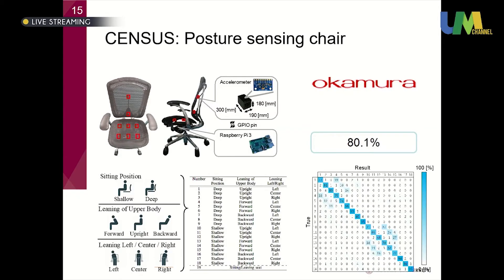We also developed a sensor with furniture company Okamura, the biggest furniture company in Japan. They asked us to make a sensor-equipped chair. We embedded a tiny sensor on the back of the chair to monitor posture, recognizing 18 kinds of postures including sitting depth and upper body leaning angle with 80% accuracy. Okamura is currently commercializing this. We also use this sensor for monitoring student concentration.